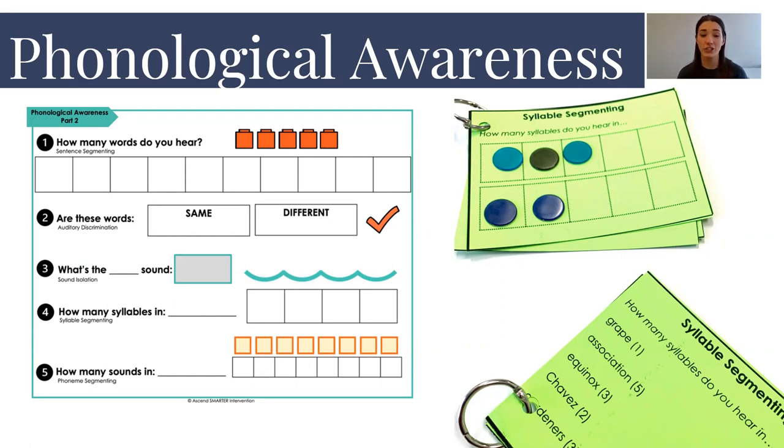For auditory discrimination, are the words mock and knock the same or different. For sound isolation we'll ask something like what is the first sound you hear in the word struck? How many syllables do you hear in the word brick? And tap out the sounds or tell me the sounds you hear in the word flock. So students are going through these activities and it's helping to prime their brain for sentence writing with the sentence segmenting, for spelling with the different auditory discrimination, being able to hear the sounds, isolate the sounds, as well as segment those sounds.